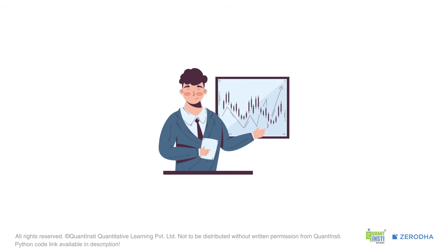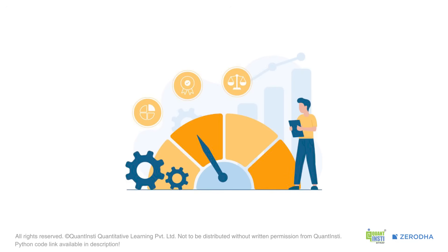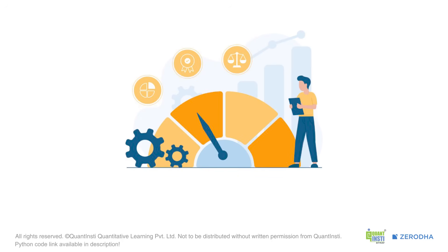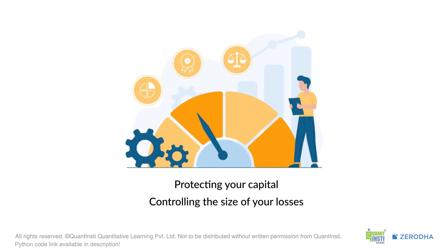Hey everyone! Ever wonder how pro traders stay in the game? It's all about risk management. Risk management in trading is essentially protecting your capital from big, unexpected losses. It's not about avoiding losses entirely — they are part of the game — but about controlling their size. Think of it as your financial seatbelt in the volatile world of trading.